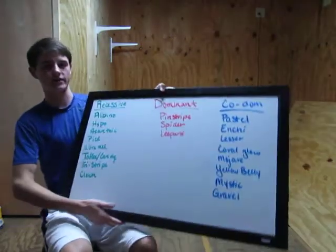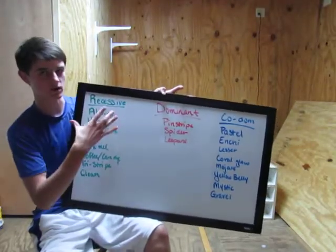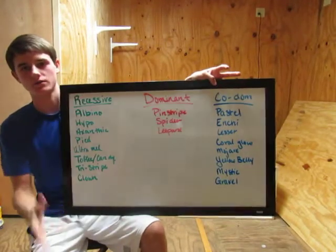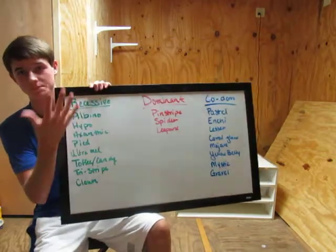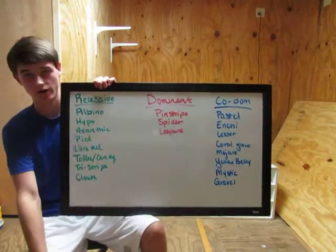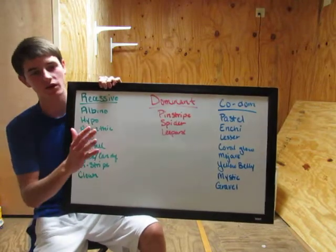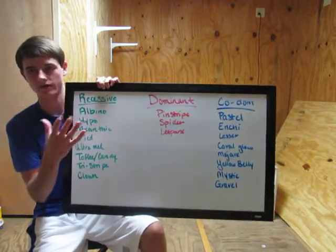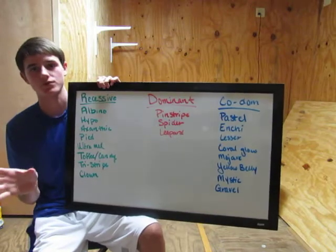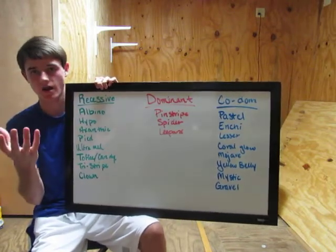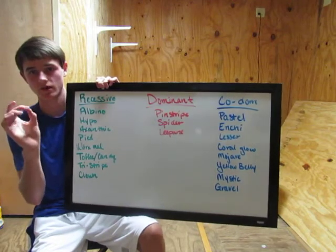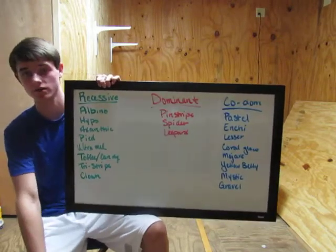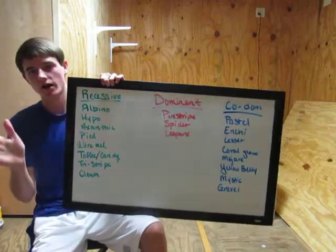Let me explain recessive. Recessive is a type of morph that can only be displayed in offspring whenever both the mother and father are carrying the gene — passed on homozygously. So if the mother and father of the clutch don't both carry whatever gene you're hoping for, like if they don't both carry albino, you will never produce homozygous albinos. You can produce heterozygous — meaning they carry the gene — but absolutely no homozygous.